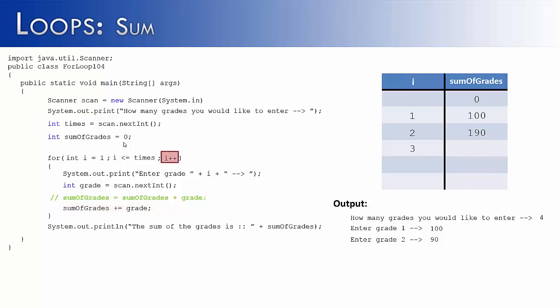Increment i by one, so i is now three. i is less than times, so therefore we enter the loop again. We're going to prompt the user again to say, what is the third grade? And this time I'm entering in an 80. So 80 plus 190 is 270, so our sum of grades is now 270.